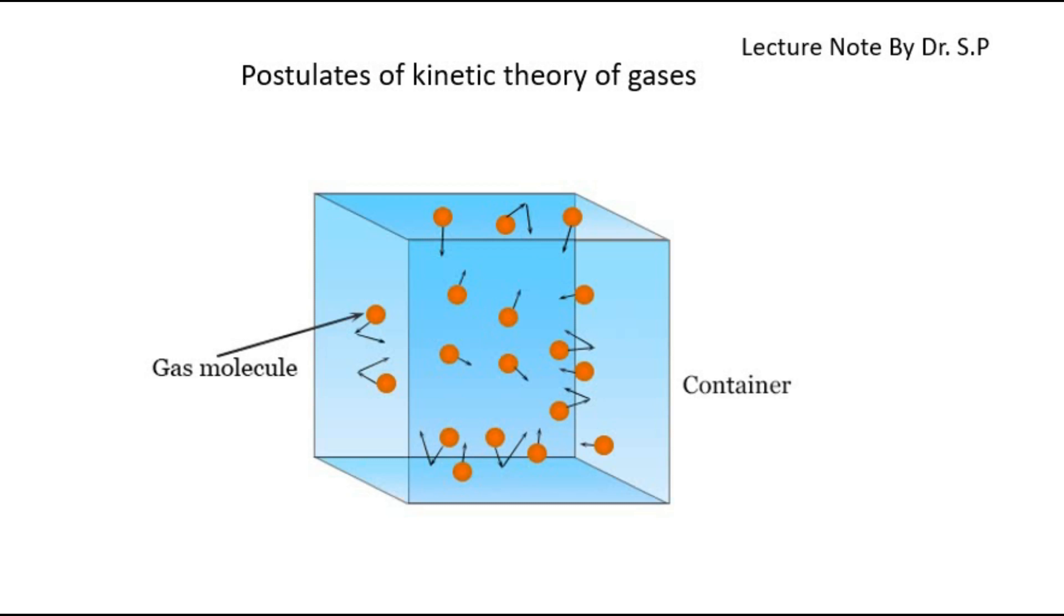The kinetic theory of gases is a law that explains the behavior of a hypothetical ideal gas. According to this theory, gases are made up of tiny particles in random, straight-line motion.